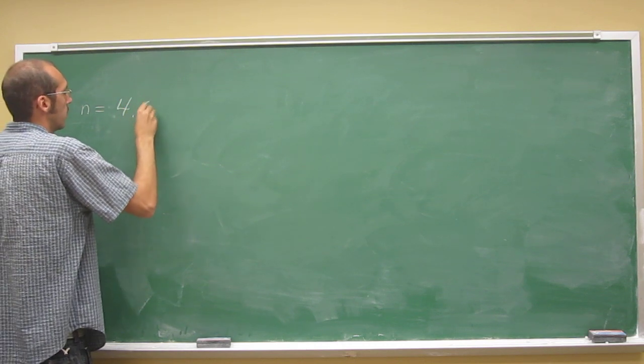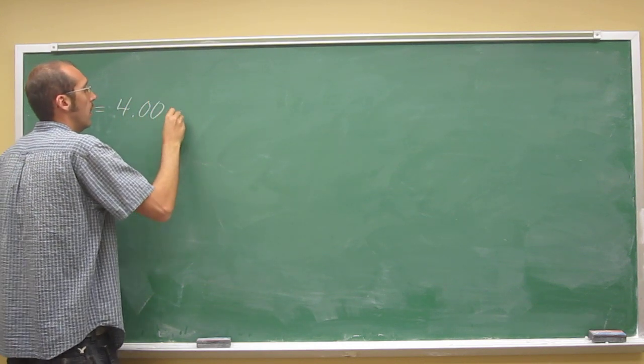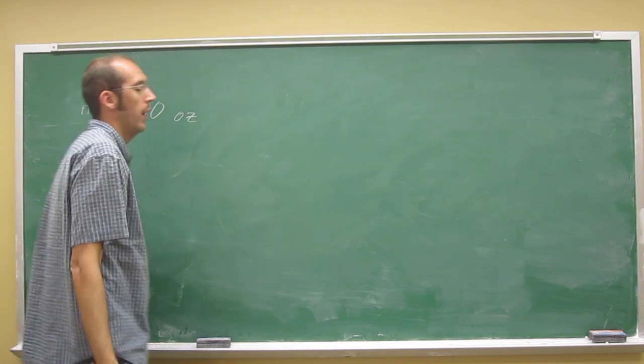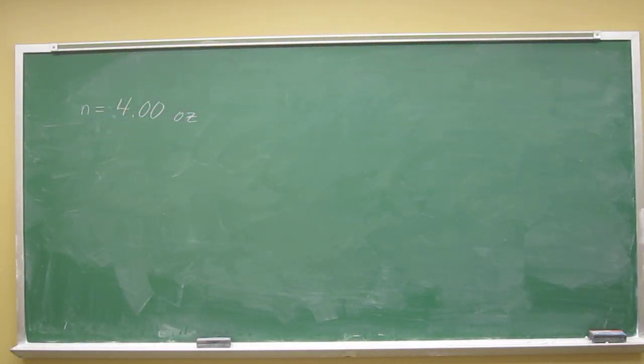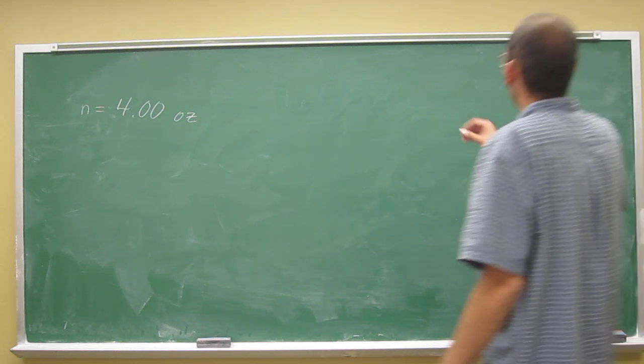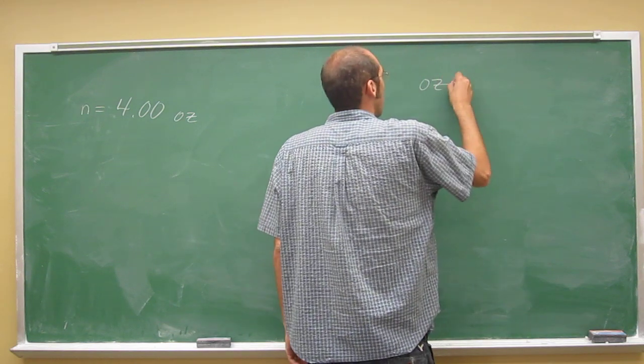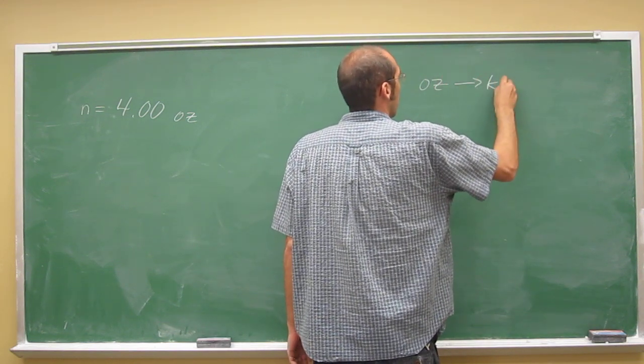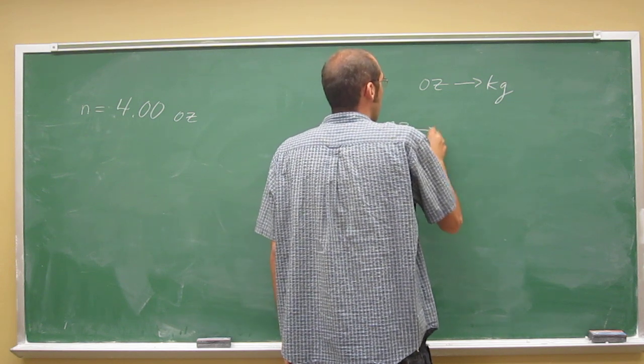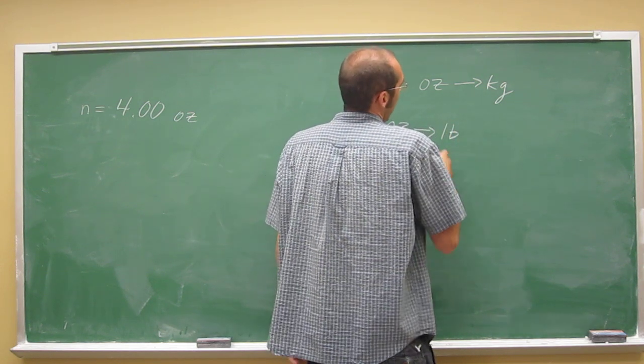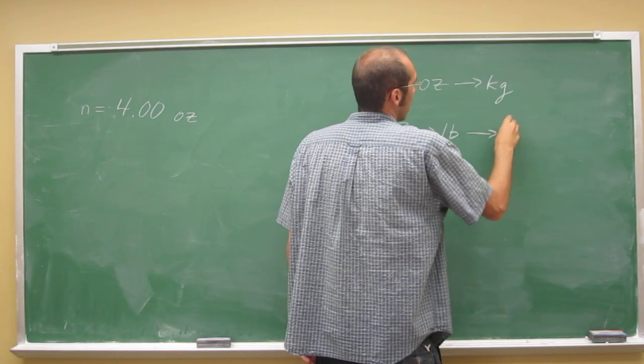So we want to go from ounces to kilograms. So we got, well, it's 4.00 ounces. But if we look at our conversion factors, we don't have a conversion factor that goes directly from ounces to kilograms. But we do have one that goes from ounces to pounds, and we've got one that goes from pounds to kilograms.